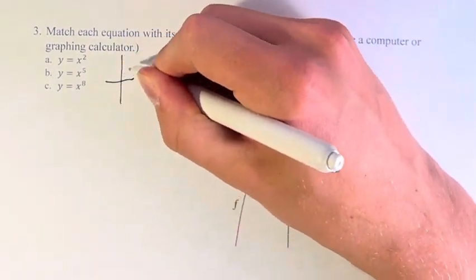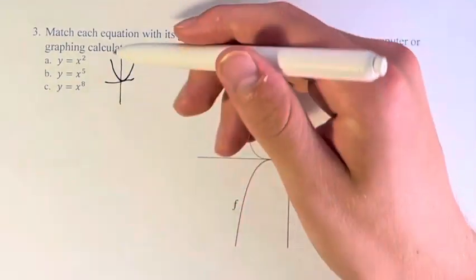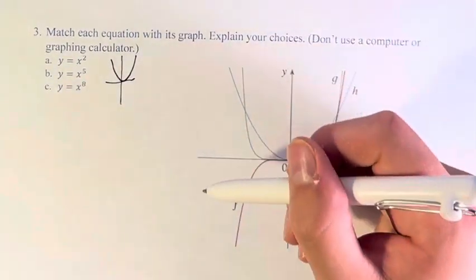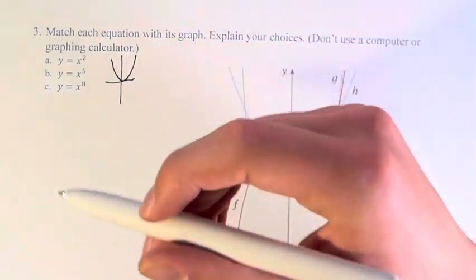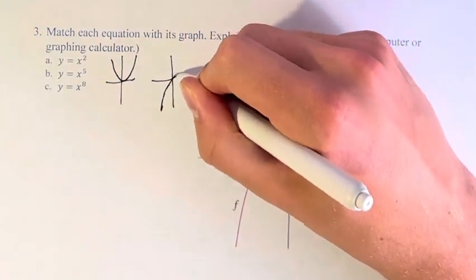Therefore, their graph is going to look something like this, looking like a general parabola. Meanwhile, x to the fifth has an odd exponent. Therefore, its shape is going to look something like this.